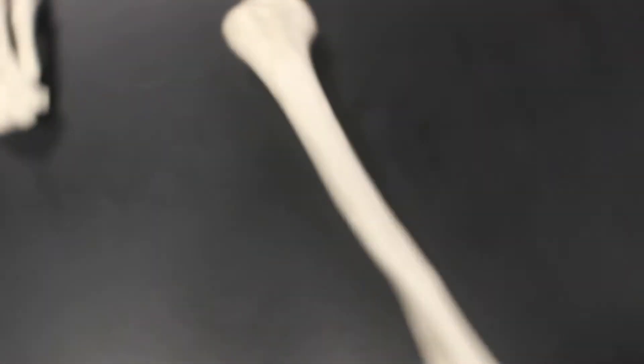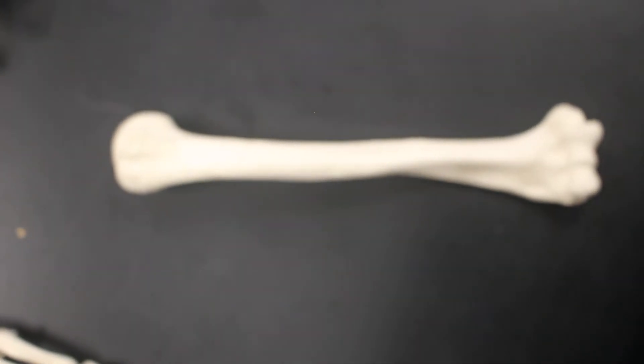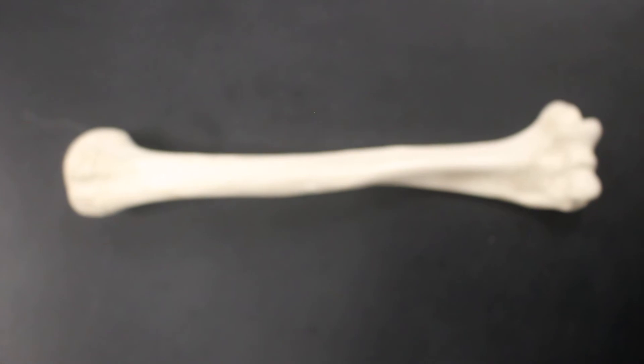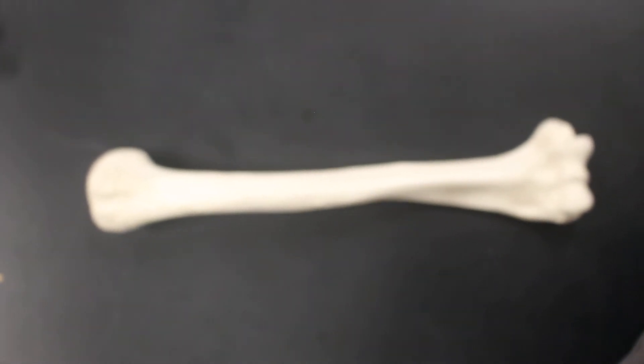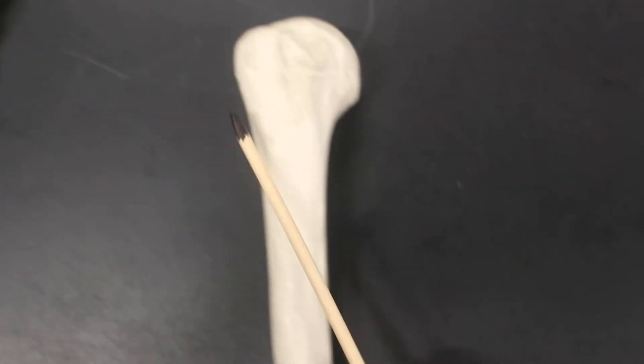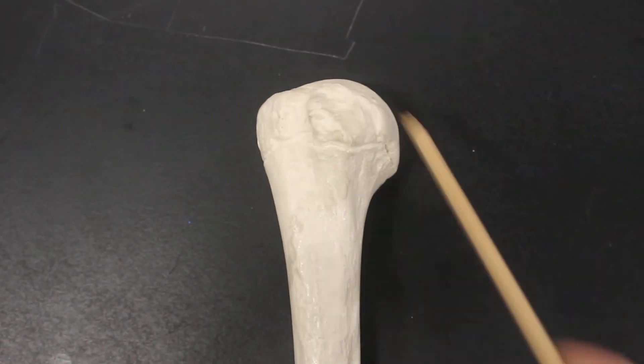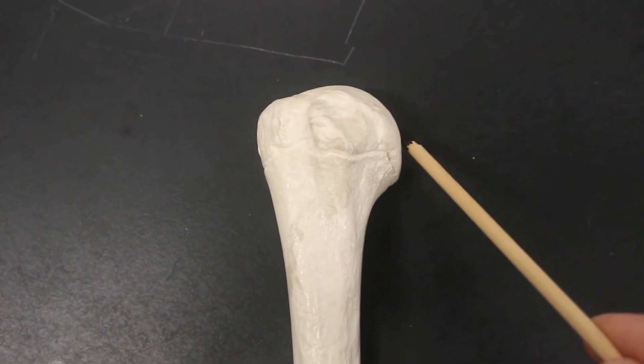Here we have the humerus. So here is the humerus. Isn't that hilarious? Makes you just want to laugh really hard. I wish it would come in focus. All right. At the proximal end here, we have the smooth area. That's the head.